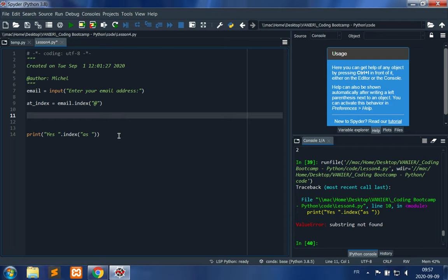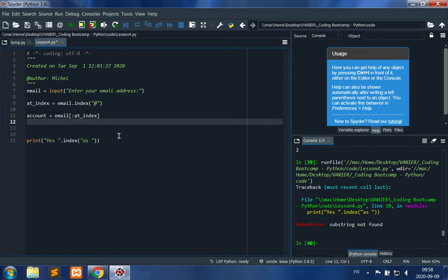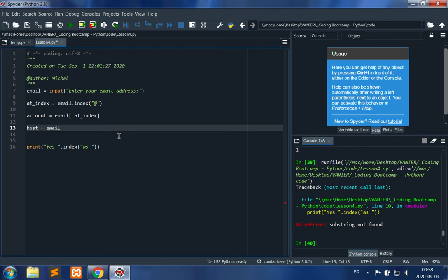Then we will separate this into account, which is equal to the part of the email before the at symbol. We use the default start and we use the at_index as the end. Host is equal to email starting at at_index plus one and going all the way to the end.